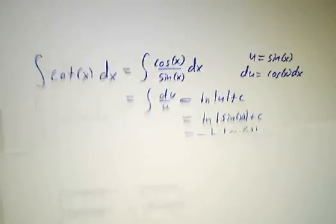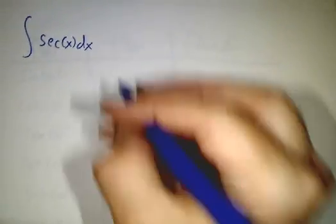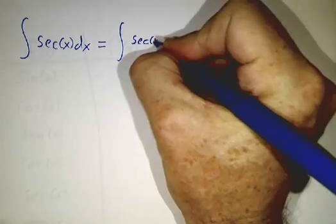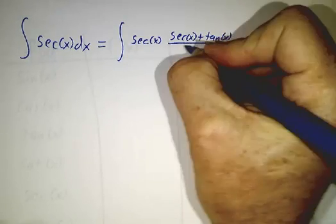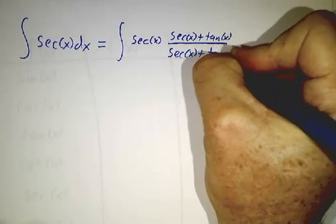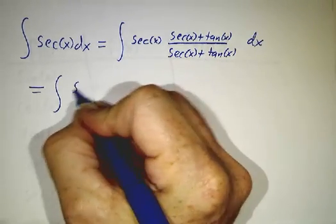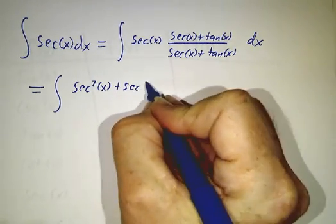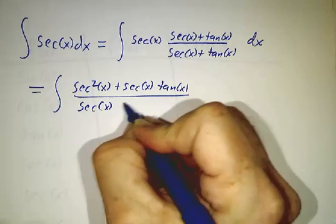Now come the hard cases — secant and cosecant. Secant involves a really sneaky trick, the kind of trick that you wouldn't think of in a million years. But somebody really clever about 350 years ago thought of the trick and we're going to piggyback off of what he did. What we're going to do is multiply secant of x by 1 in a fancy way — multiply by secant of x plus tangent of x divided by secant of x plus tangent of x. We can all agree that that's 1. That becomes the integral of secant squared of x plus secant of x tangent of x, divided by secant of x plus tangent of x.